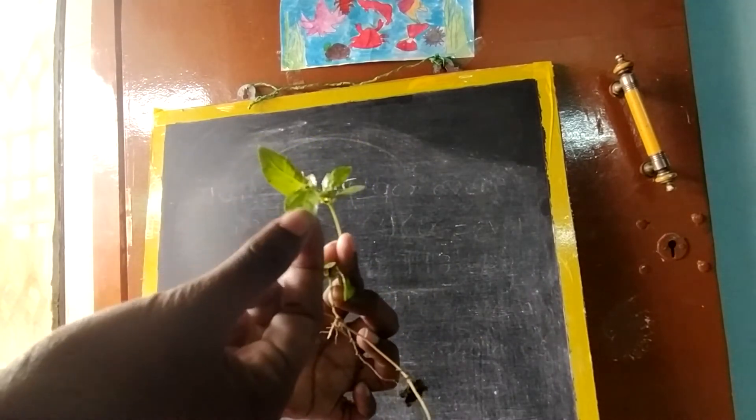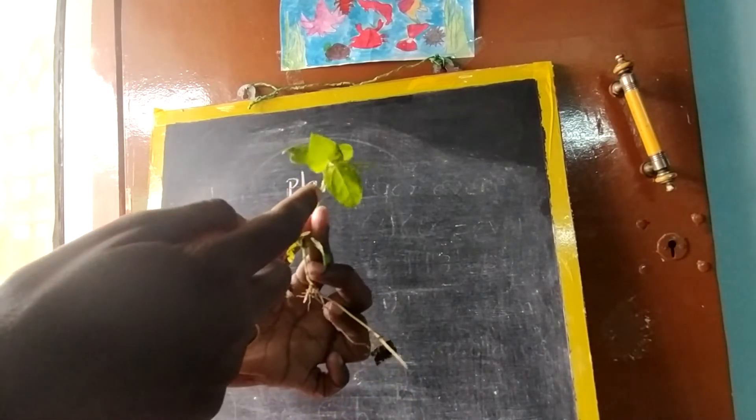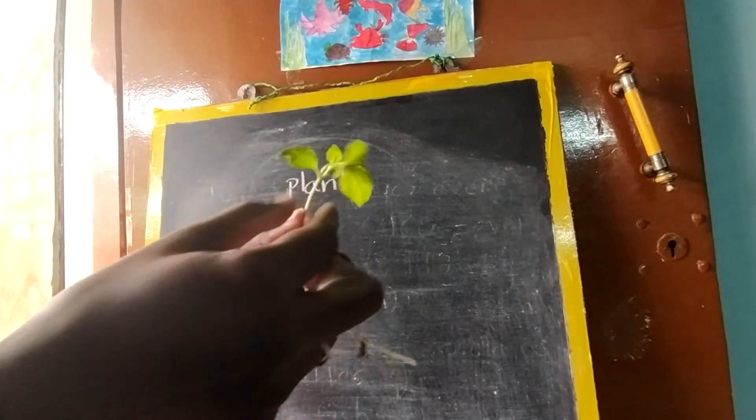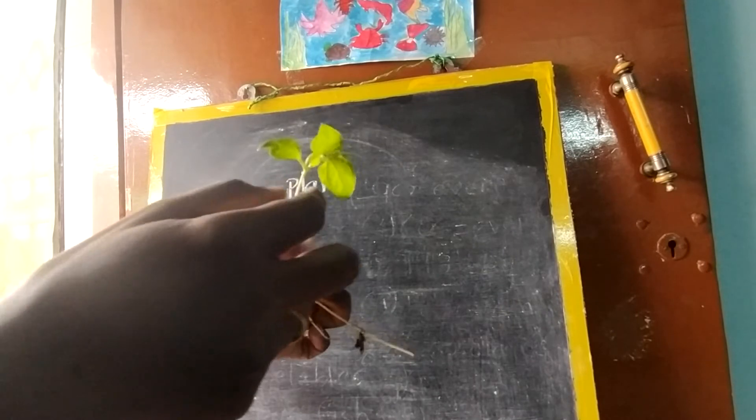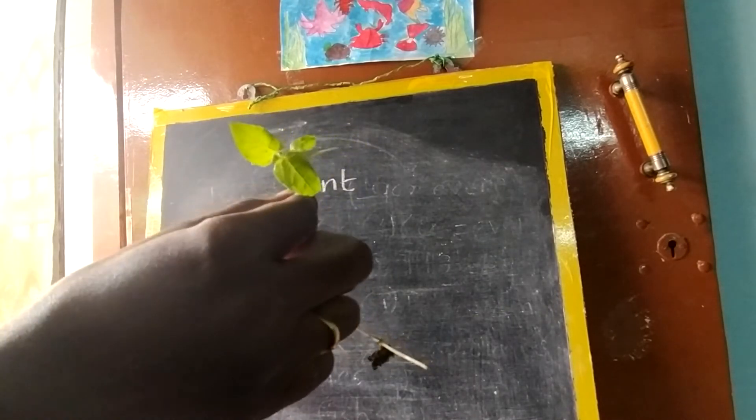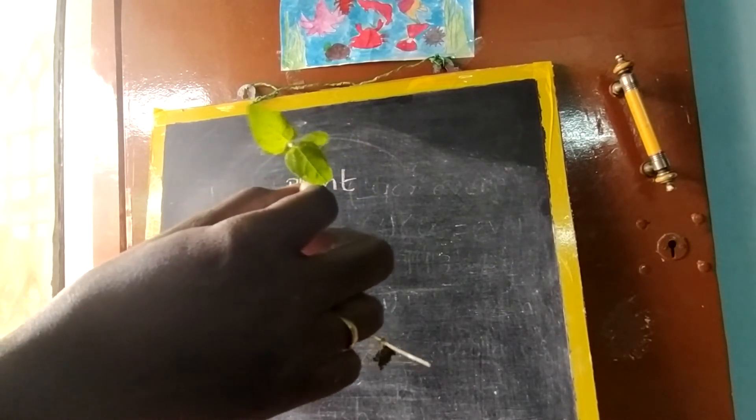The leaves, this is called as leaf. And this is called as stem. See this is thin, but when it grows bigger, this will become very strong, it will become thick.